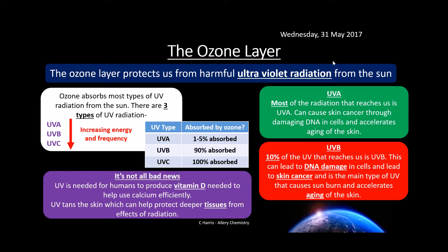It's not all bad news though — UV is needed to produce vitamin D, which your body needs to use calcium effectively and develop strong bones. A deficiency in vitamin D may cause issues with bone strength and formation. UV also tans the skin, helping protect the deeper tissues underneath from the effects of radiation. People with darker skin have pigmentation that helps protect against some of the most harmful UV radiation.